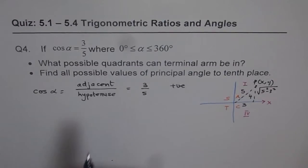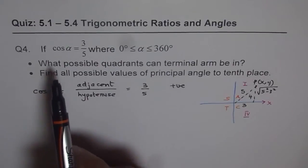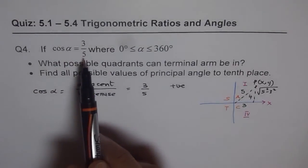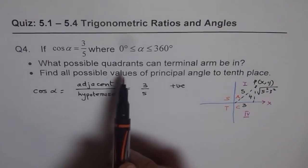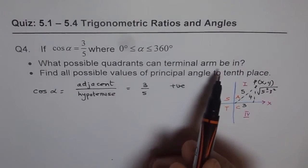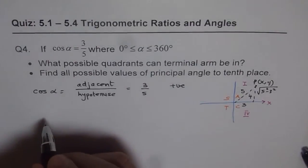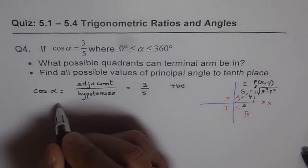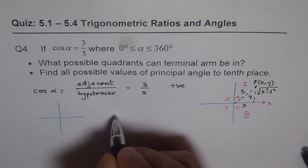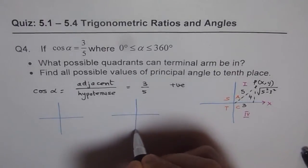So therefore, in this particular case, we are given cosine alpha is 3 over 5, which is a positive value. What possible quadrants can terminal arm be in? So terminal arm can be in two places, right? Which is, let's draw those two cases. So in this, I'll draw the first one and then here, we'll draw the second one, correct?